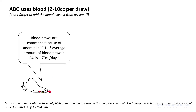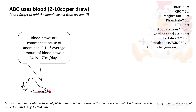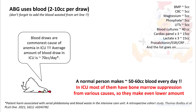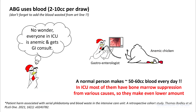ABGs also use 2 to 10cc per draw, and we know that blood draws are the most common cause of anemia in the ICU. The average amount of blood drawn in the ICU is around 70cc per day across all tests. Understand that a normal person only makes 50 to 60cc of blood per day, and ICU patients have relatively more bone marrow suppression due to inflammatory processes, so they make even less. No wonder everybody in the ICU is anemic and gets a GI consult.